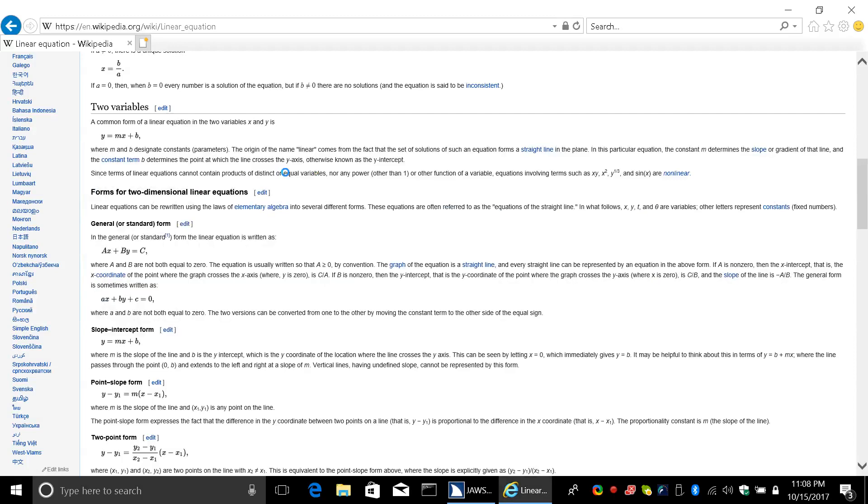This is the example of JAWS and IE11 interacting with mathematics on Wikipedia. We've got the equation for the line going between two points, and so let me turn on the speech for the screen reader.